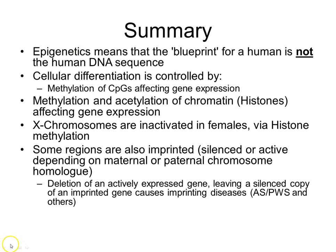In summary, there are two major forms of epigenetic regulation. First, DNA methylation: methylation of CpG islands in a promoter region generally silences gene expression. Second, histone modifications — specifically methylation and acetylation of the histone H3 N-terminal tails. If they're acetylated, gene expression is potentially on; if they're methylated, gene expression is generally switched off. There are also additional slides on imprinting for those who are interested.